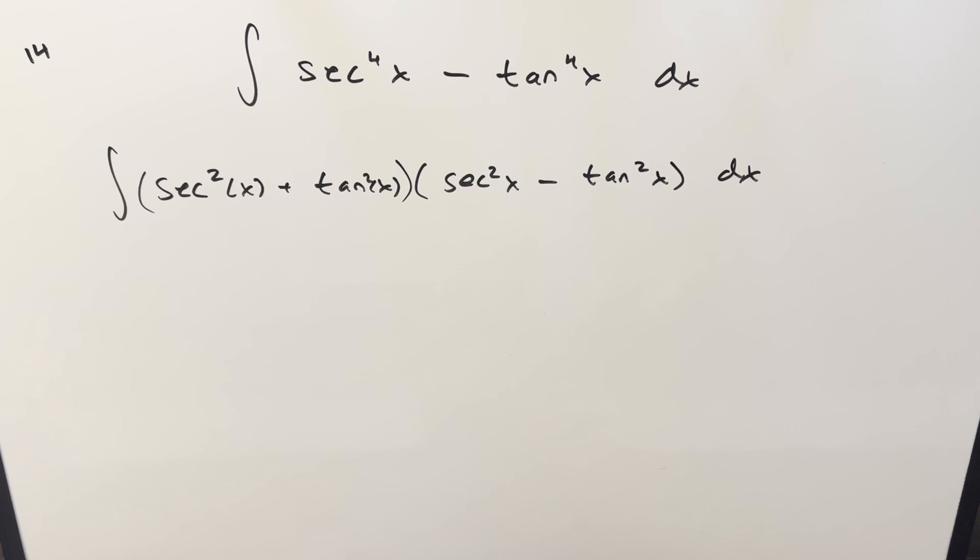Then over here, we can use the identity that secant squared x is the same thing as tan squared x plus 1, but when you plug that in, the tan squareds are going to cancel, and we're just left with 1.